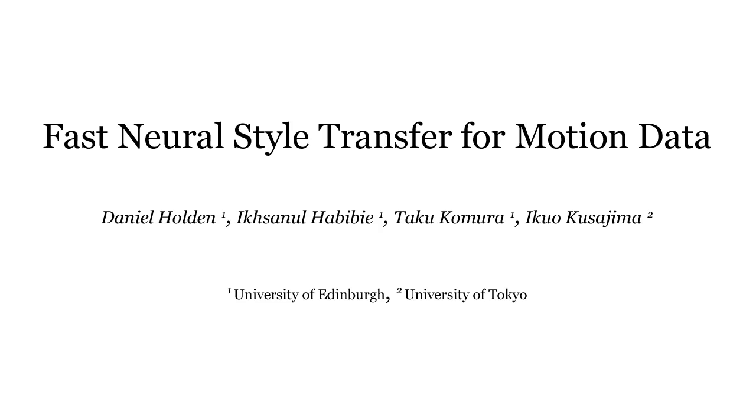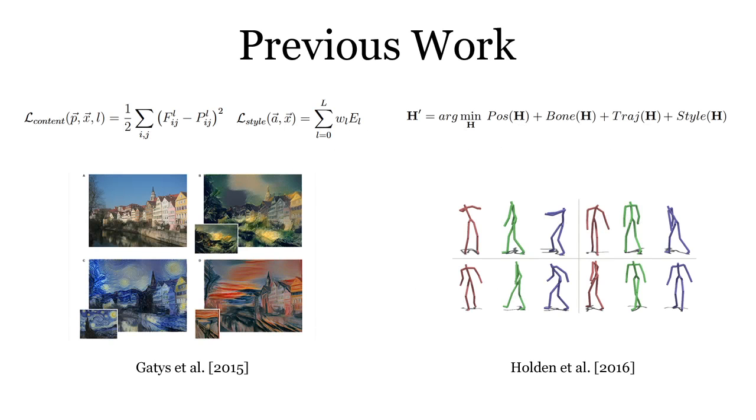We present a method for fast neural style transfer of motion data using a feedforward convolutional neural network. Previous methods for neural style transfer are slow as they require optimization to be performed to produce the final output.